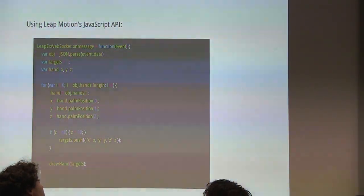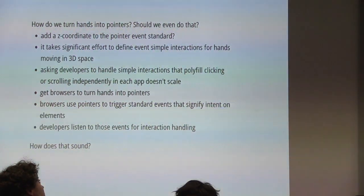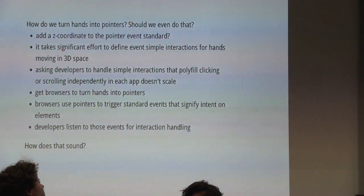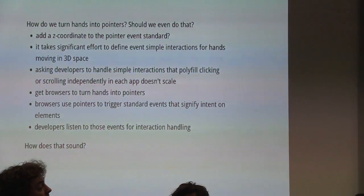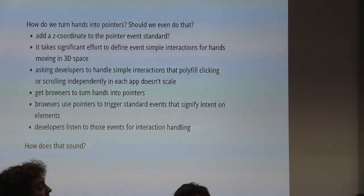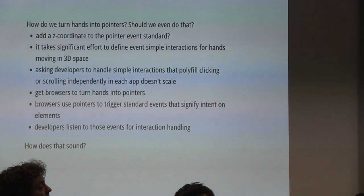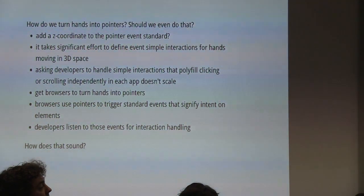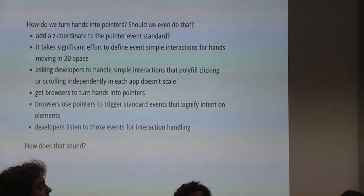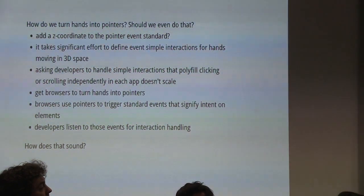How do we turn these into pointers? Pointers don't really give us a Z axis, but it shouldn't be that difficult to add it to the standard. Hands from LeapMotion can fit into the pointer event spec.